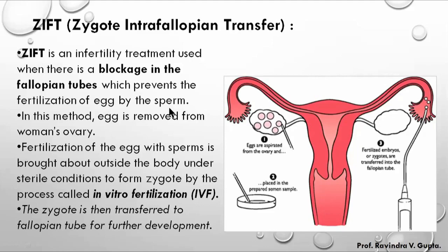This is used when there is a blockage in the fallopian tube which prevents fertilization of the egg by the sperm. In this method, the egg is removed from the woman's ovary, fertilization of the egg with sperm is carried out outside the body under sterile conditions to form a zygote.